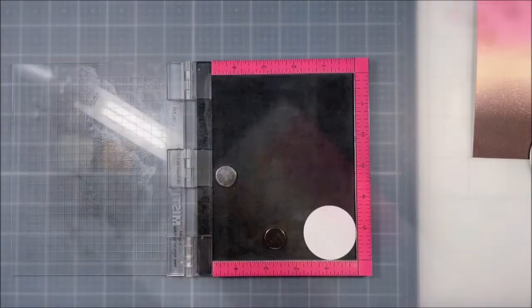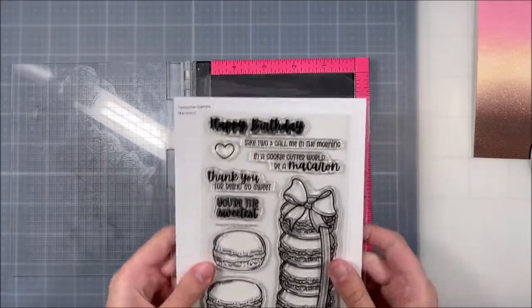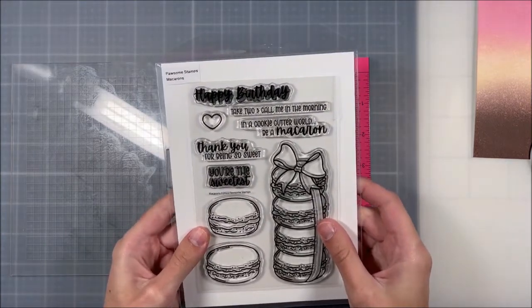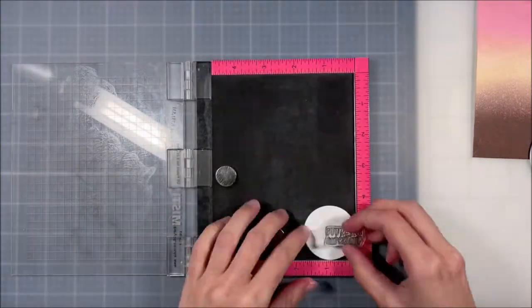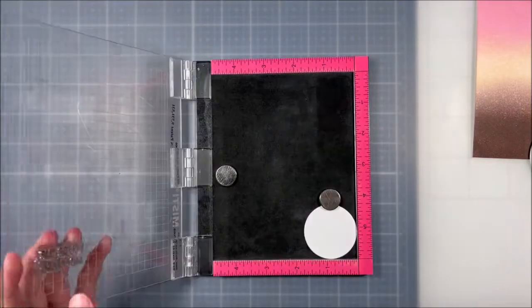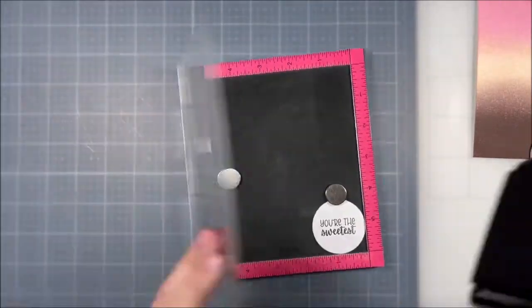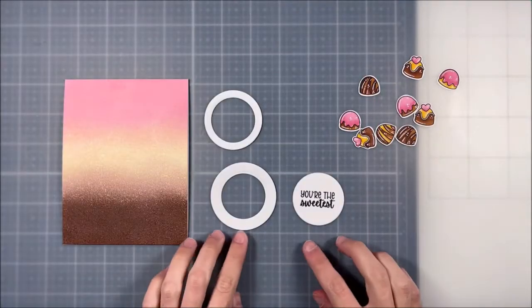Once I was happy with the ink blending, we are going to move on to stamping the sentiment on this center circle. So I'm going to use the one that says 'you're the sweetest' from the Macaroon stamp set, which I think is super cute. And this circle is going to be a little bit smaller than my other two.